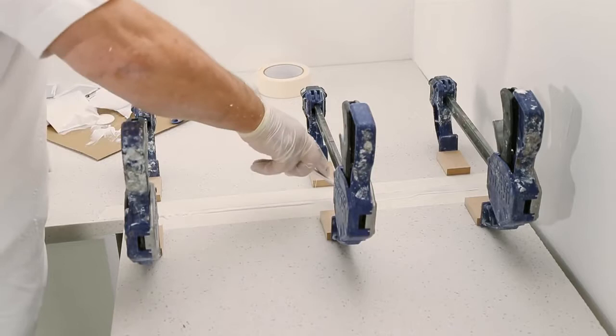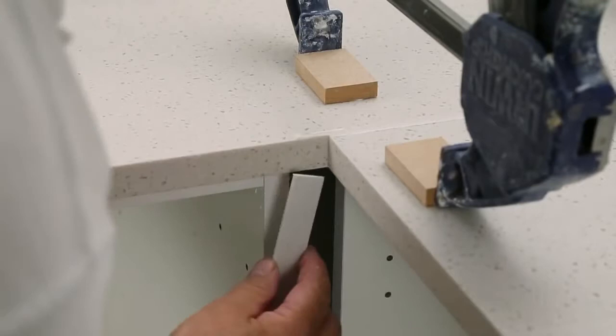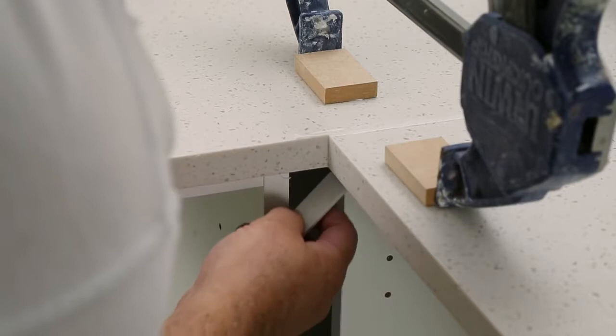The spatula is then used to remove excess glue from the joint. This is only lightly passed over the surface, as it is important that the adhesive is left on the surface to allow for the shrinkage that will occur as it cures. While the adhesive is still wet, the masking tape is removed, leaving a narrow bead of adhesive.